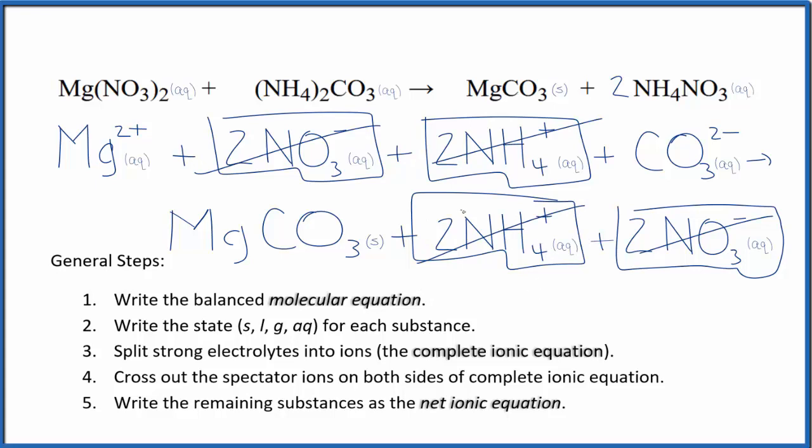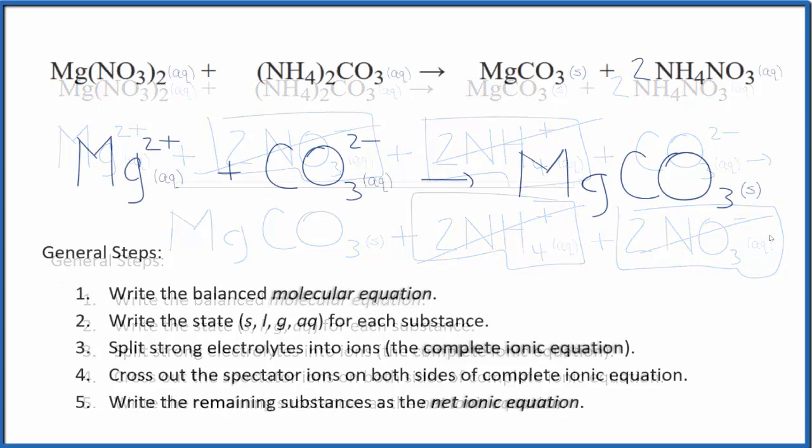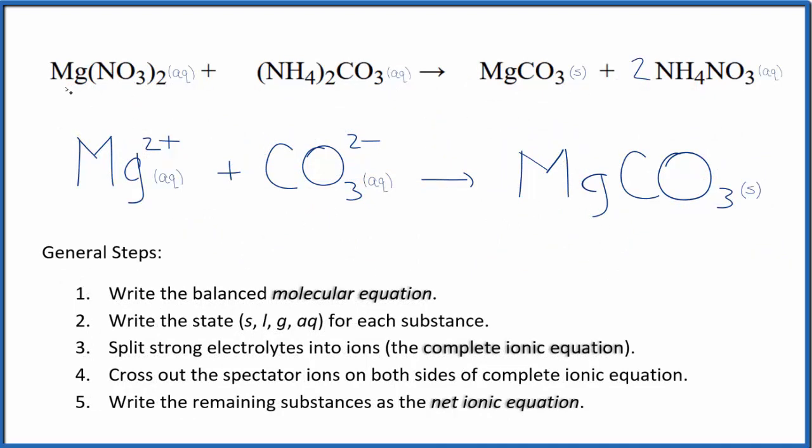What's left is the net ionic equation. This is the balanced net ionic equation for magnesium nitrate plus ammonium carbonate. The atoms are balanced and the charge is balanced too - 2+ and 2- gives us a net charge of zero in the reactants. In the products, this is neutral, net charge of zero.